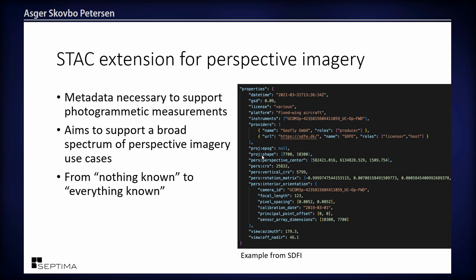Here's an example STAC item using the extension — it has the necessary metadata for photogrammetric calculations. The properties at the top come from STAC and the EO extension we heard about earlier today. The PRS prefix is the new extension: it includes the exact location of the camera center, the rotation matrix to avoid omega, kappa, and phi — which always cause trouble — and the interior orientation of the camera, including focal length.